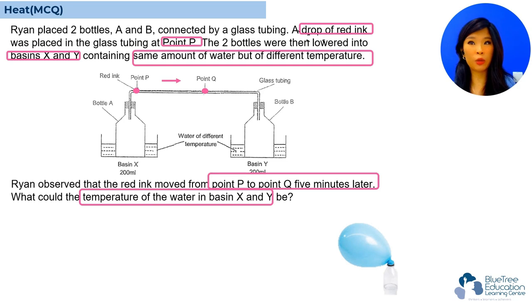So, now let's take a look at what is going to happen to the air in basin X. In order for the red ink to move from point P to point Q, the air in bottle A has to gain heat and expand in order to push the red ink from point P to point Q. That is why the air has to be warmer in bottle A, whereas in bottle B, the air has to be colder. So, for the air to be colder, it has to be lower temperature than bottle A. That is for the red ink to be pushed from point P to point Q because the air in bottle A expands and pushes from point P to point Q.